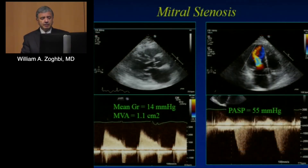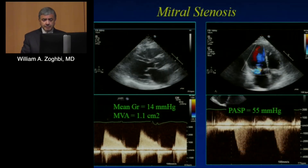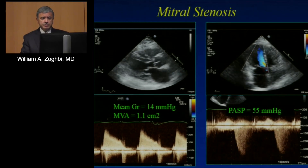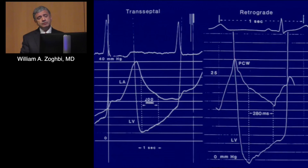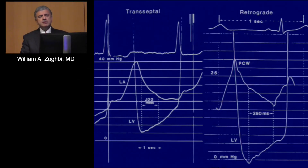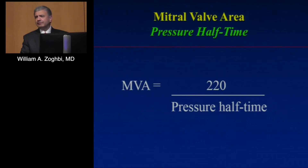This is the principle of pressure half-time: it takes time for pressure to equalize between the atrium and the ventricle, which tells you about the severity of mitral stenosis. You look at gradient, valve area, and pulmonary pressure — for example, a valve area of 1.1 with PA pressure of 55 indicates significant stenosis. For the invasive cardiologist, a mean gradient by Doppler is nowadays probably better than catheterization unless you do a transeptal technique, because there can be issues with wedge pressure estimation. The pressure half-time formula is simple but can go wrong about 20% of the time.